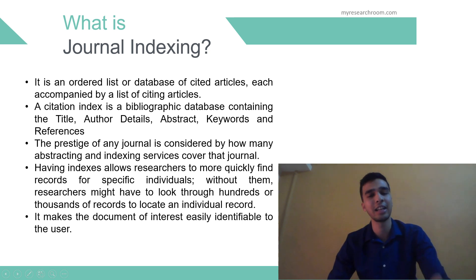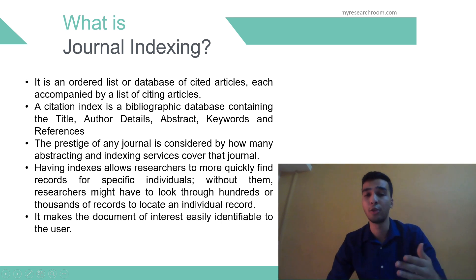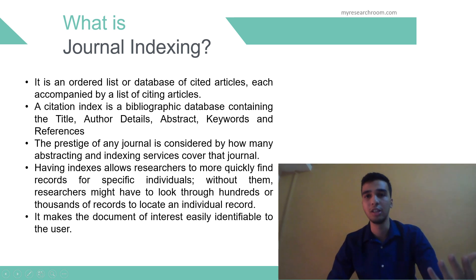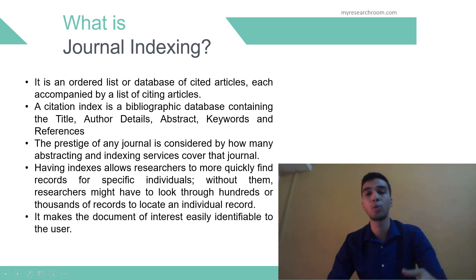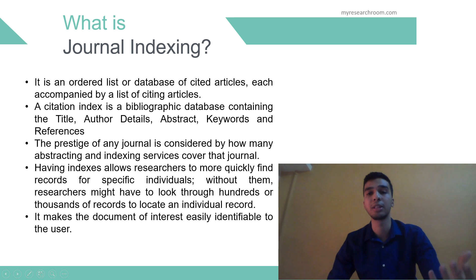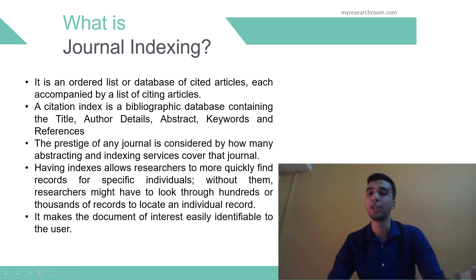The prestige of any journal is considered by how many abstracting and indexing services cover that journal. It has been observed that in the last few years, authors have started searching for indexed journals to publish their articles. Having indexes allows researchers to more quickly find records for specific individuals. It also represents a number referring to a list of terms, definitions and topics arranged in alphabetical order to efficiently guide readers to the desired information within the content. It makes the document of interest easily accessible to the user.